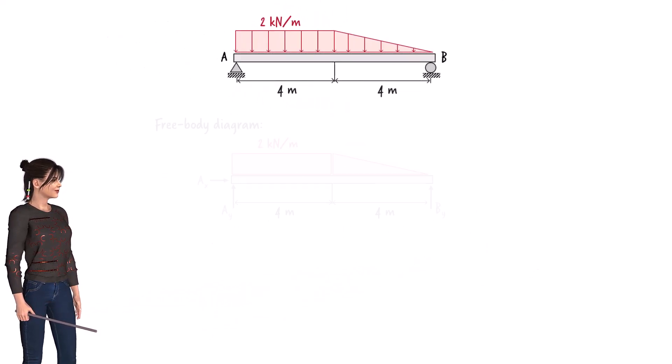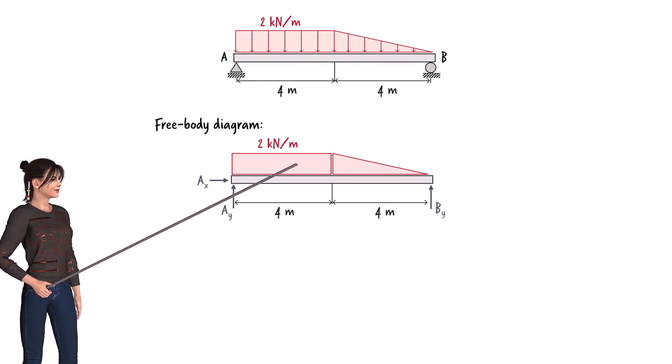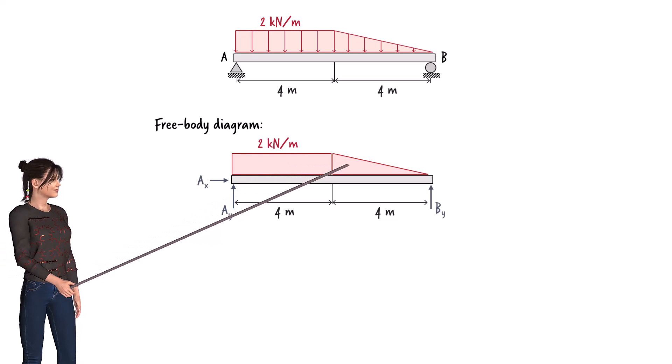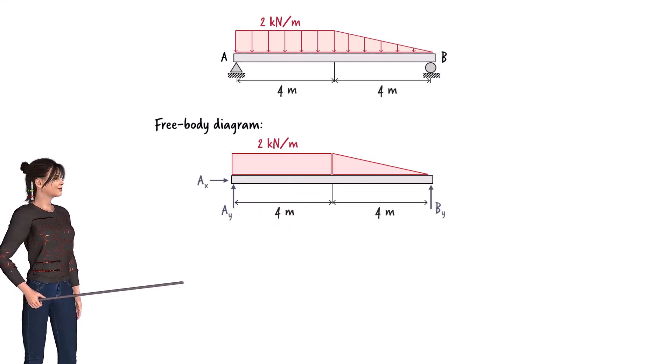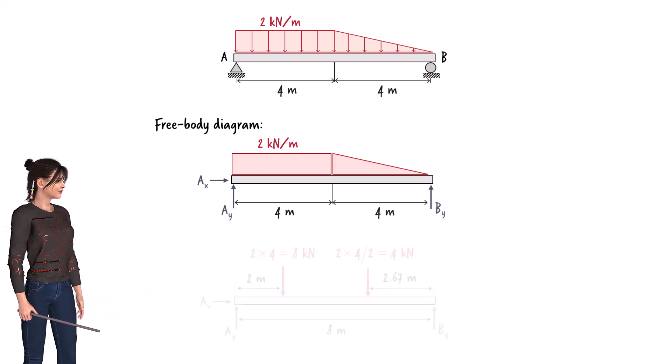Here is the free-body diagram of the beam. We can divide the load into a rectangle and a triangle. The height of the rectangle and the triangle equals the intensity of the distributed load. Each area can be replaced with its equivalent point load.